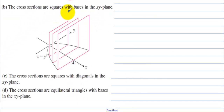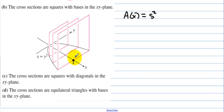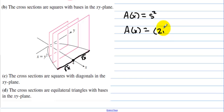The cross-sections are squares with base in the xy-plane. The area of a square is side squared. Half the base is the square root of x and the other half is also square root of x, so the full side length is 2 square root of x. Squaring that gives A(x) equals 4x. We could continue on to find the volume by integrating, but that's not what we're asked to do.